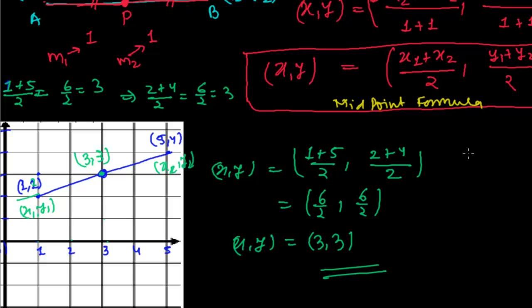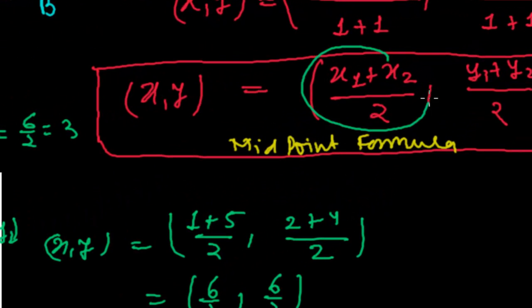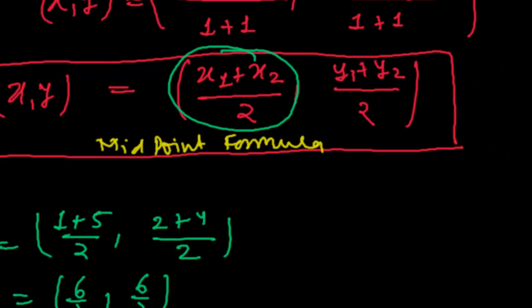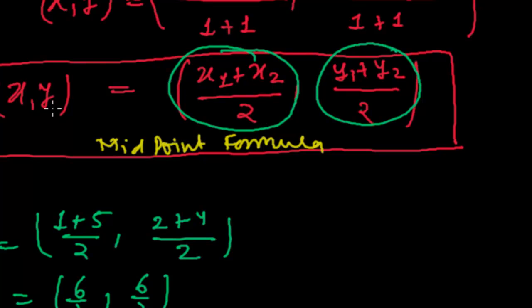In any line, if you have to find the midpoint, simply add the x-coordinates and divide by 2, then add the y-coordinates and divide by 2. The two values you get are exactly the coordinates of the midpoint. This is the midpoint formula. In the next video, we'll be doing lots of problems related to the section formula and midpoint formula. Keep watching — bye-bye!